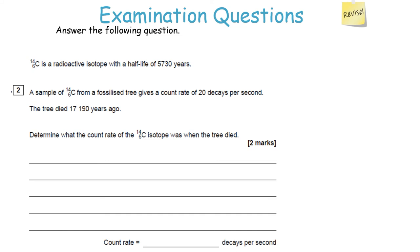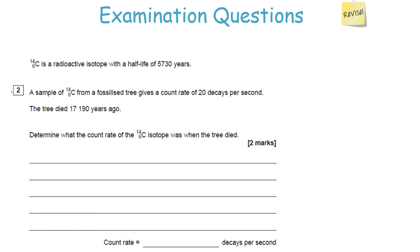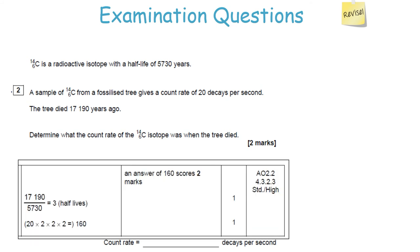Carbon-14 has a half-life of 5,730 years. A sample from a fossilized tree gives a count rate of 20 decays per second. The tree died 17,190 years ago — determine the count rate when the tree died. First work out how many half-lives: 17,190 divided by 5,730 equals three half-lives. Going back in time means doubling rather than halving: 20 times 2 is 40, times 2 is 80, times 2 is 160. The answer is 160 decays per second.